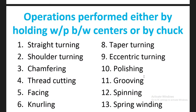Now we discuss what operations are performed on the lathe machine. Operations are performed either by holding the workpiece between centers or by a chuck. First group: straight turning, shoulder turning, chamfering, thread cutting, facing, knurling, taper turning, eccentric turning, polishing, grooving, spinning, and spring winding. These operations are performed while holding the workpiece between centers or by chuck.